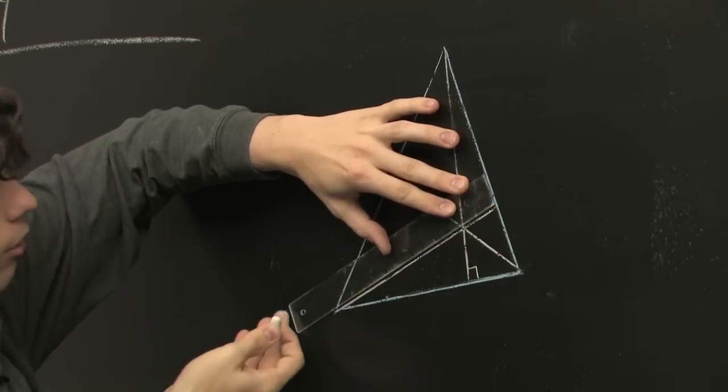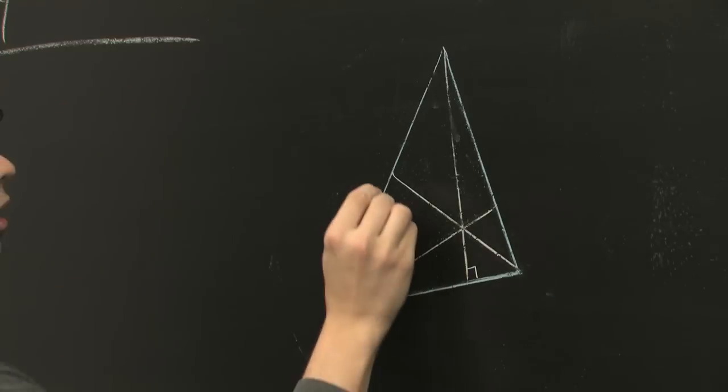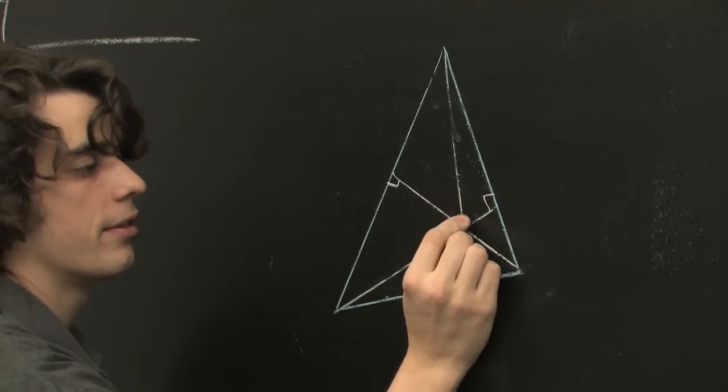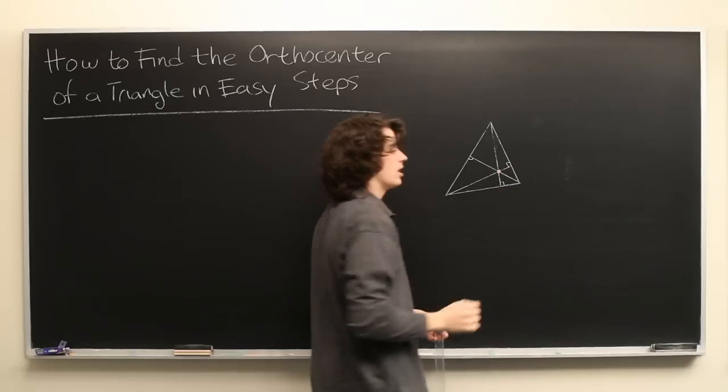And if you've done it correctly, you should find that all three altitudes intersect at a single point. And that is the orthocenter.